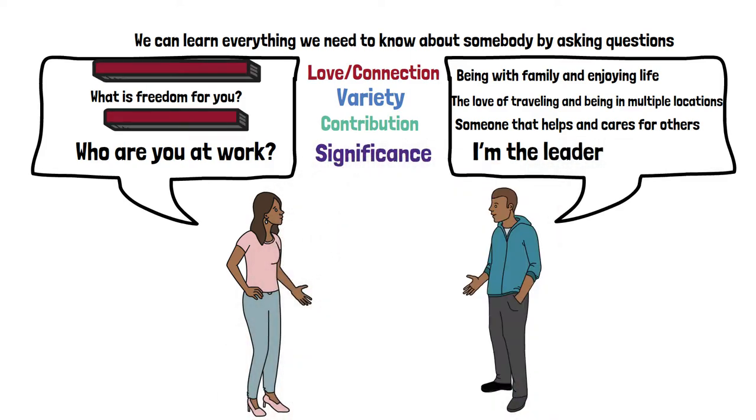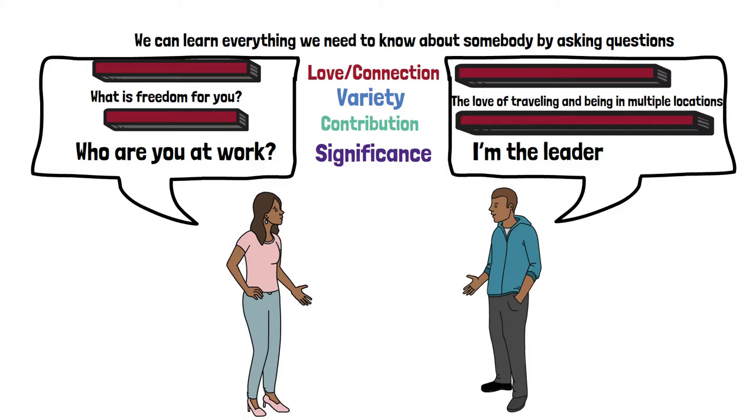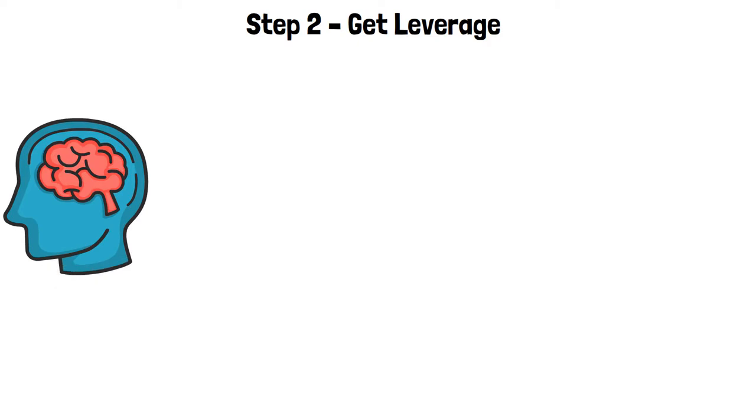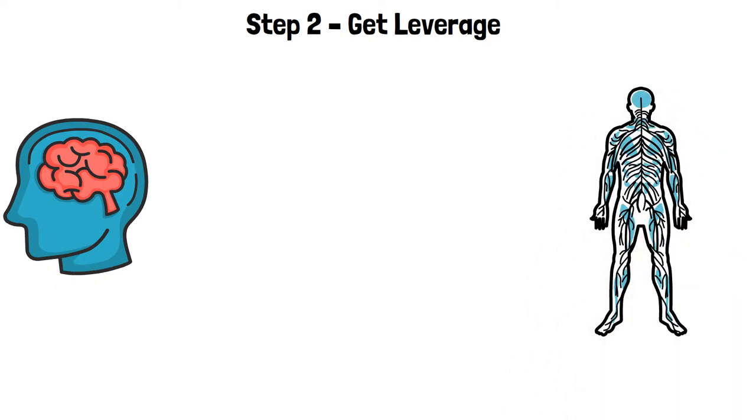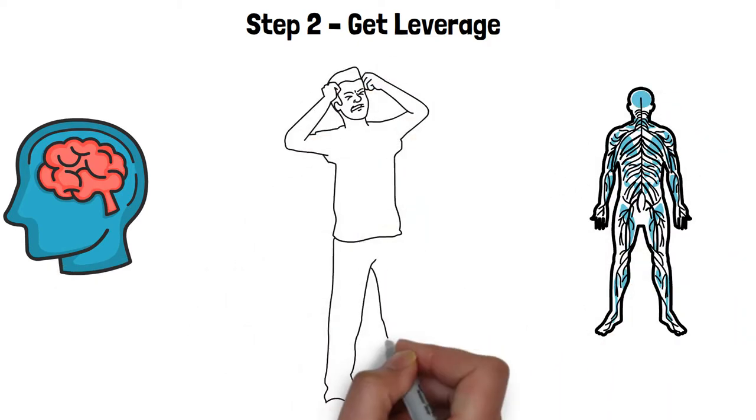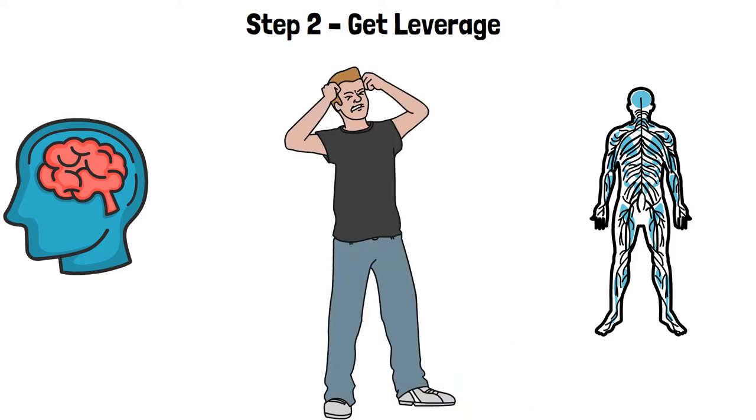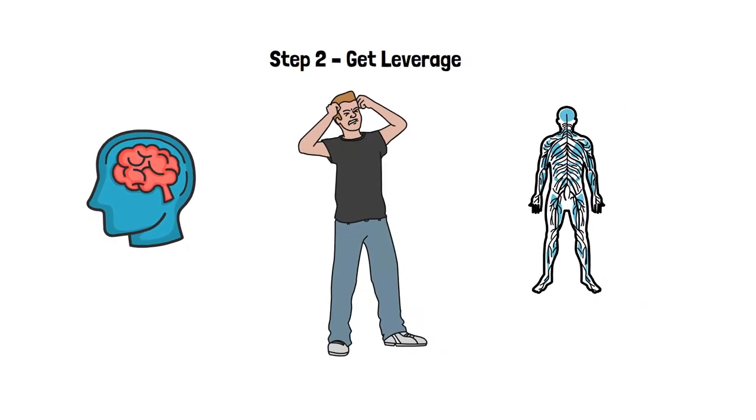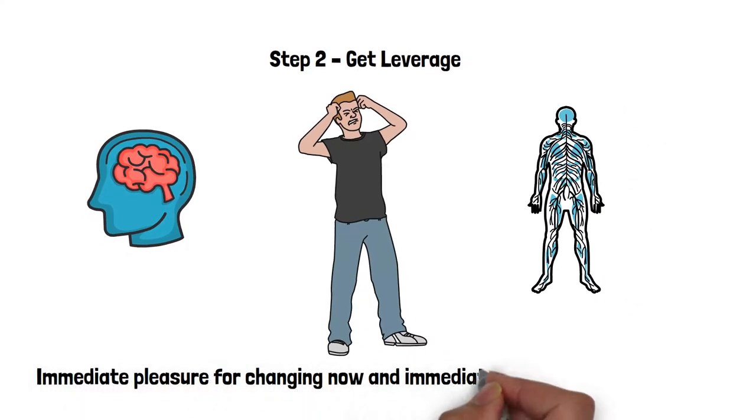Once we know the two human needs someone is trying to match more than the others, we can go to step two. Step two, get leverage. Tony Robbins says that leverage happens when your brain and body becomes one. And you go, this is it, no more. When you hit an emotional threshold. When feeling the change is far more painful than all the other options. Leverage must be immediate. Immediate pleasure for changing now and immediate pain for not changing now.